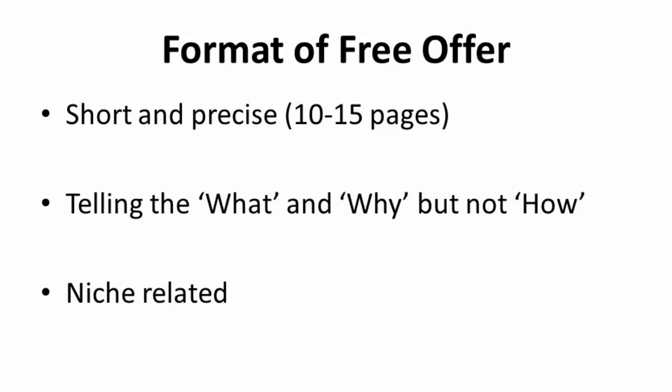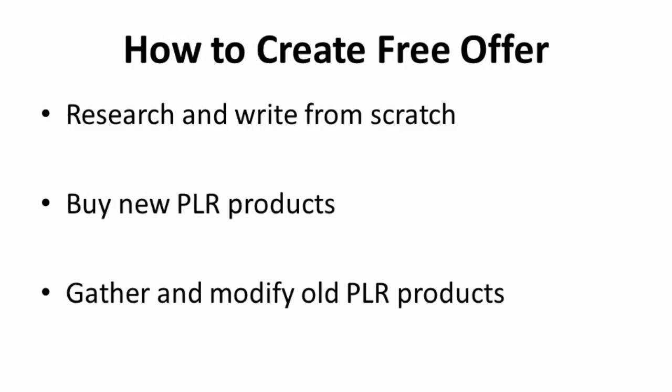For instance, if the free offer is about video marketing, your front end product must be something related to video marketing. There are three methods for you to create a free offer. First, research the topic and then write it from scratch. The first method consumes longer time as you have to write it from scratch. However, this can be an advantage for you. When you write original content from scratch, this is a unique article from you to your subscribers, which can't be found elsewhere.